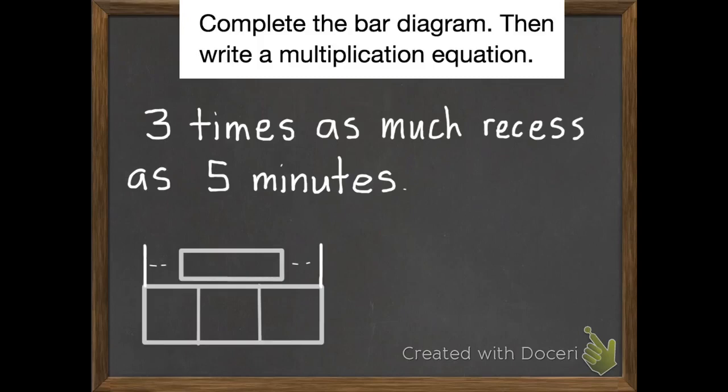Okay, so we have three bars. We need to put five in each of them. And three times five would be 15 minutes. Then we need to write a multiplication equation, which would be three times five equals 15.